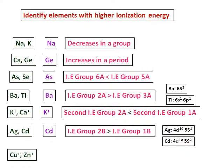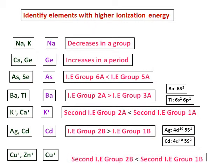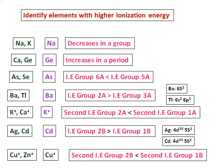For reference, the electronic configuration of cadmium shows that you have to remove an electron from a paired S orbital. Between Cu⁺ and Zn⁺, Cu⁺ will have higher ionization energy because Cu⁺, after losing one electron, will have a stable configuration.